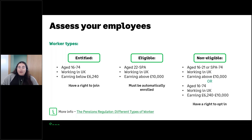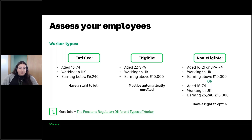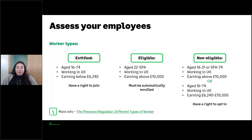A bit more information about these worker types. Entitled workers are employees aged 16 to 74 working in the UK earning below £6,240 — they have a right to join your pension scheme if they wish, and if they do join, employers have a choice whether to contribute. Eligible workers are employees aged 22 to state pension age working in the UK earning above £10,000 — these are the employees who need to be automatically enrolled into the scheme. Even if they don't want to be part of your pension scheme you must still carry out your automatic enrolment duties; employees then have the option to opt out.